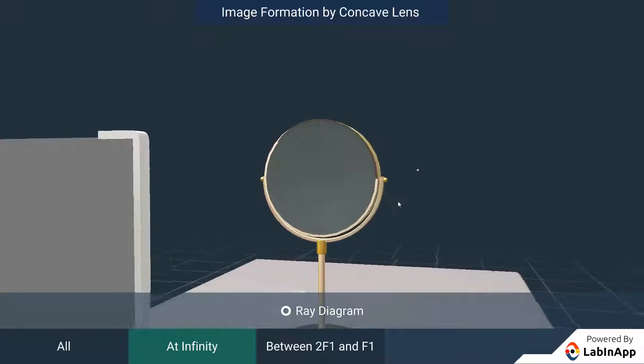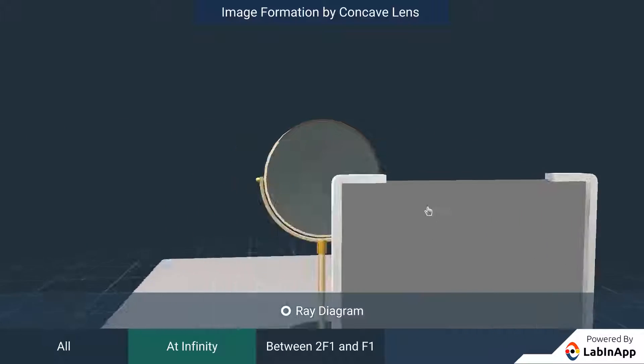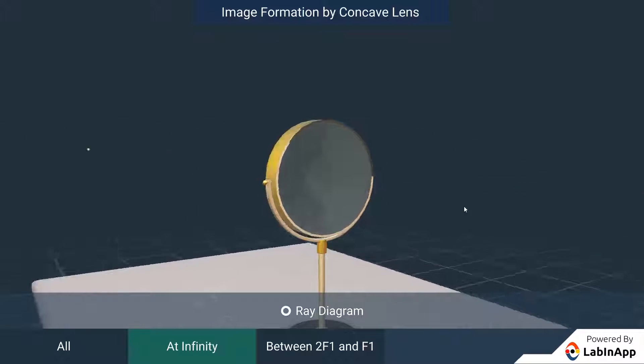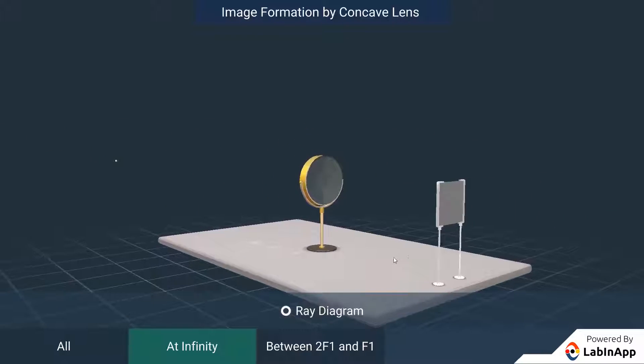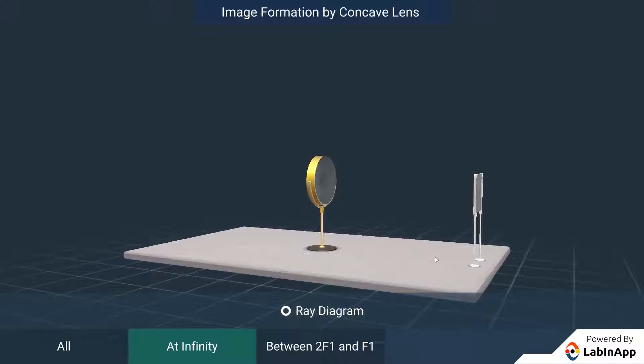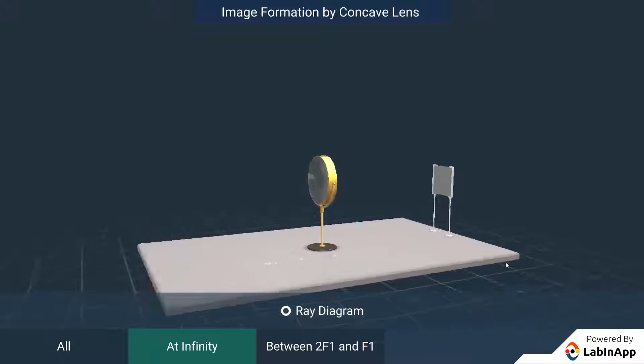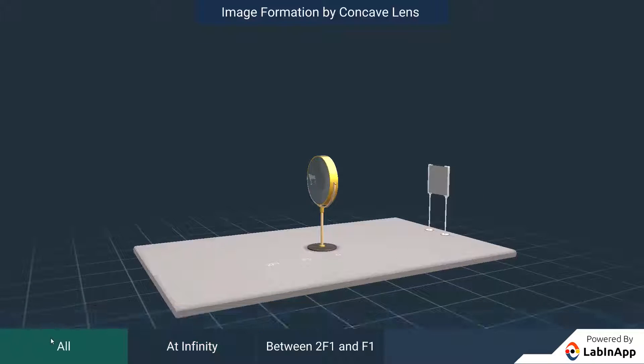Thus, we find that the image formed by a concave lens is always virtual, smaller in size and erect.